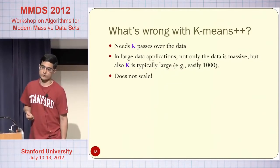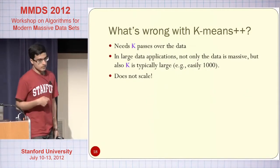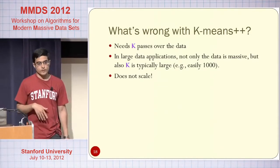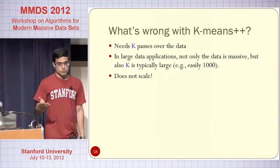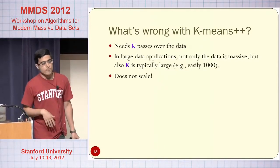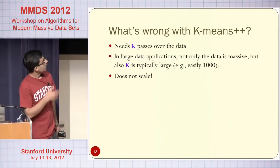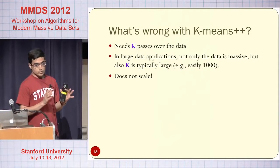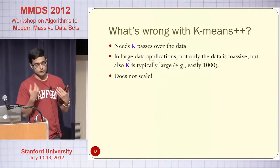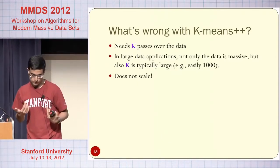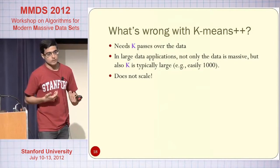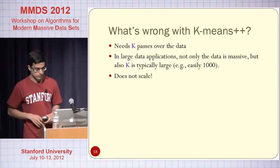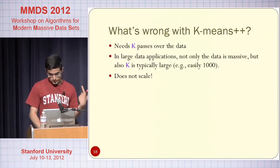What is wrong with K-means++ is that it needs K passes over the data. In applications where the data is large, it's very typical that not only the data is massive but also the number of clusters is large. For example, if you have a website with millions of users and you want to cluster users to show different content to each cluster, the number of clusters can be in the hundreds or thousands. That means just to run the initialization you need 1,000 passes over the data. If you are doing this on top of MapReduce — which was our main motivation, since the data systems we were dealing with were so large we couldn't proceed otherwise — this translates to 1,000 MapReduce iterations. If you have worked with Hadoop, you know that's just too much.